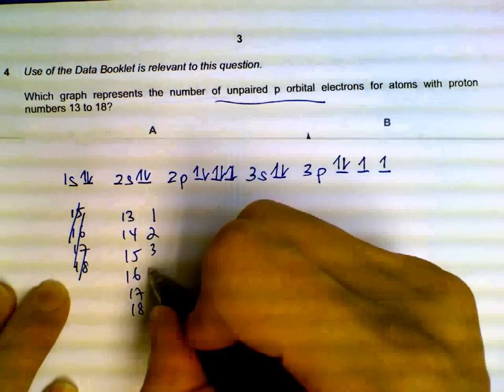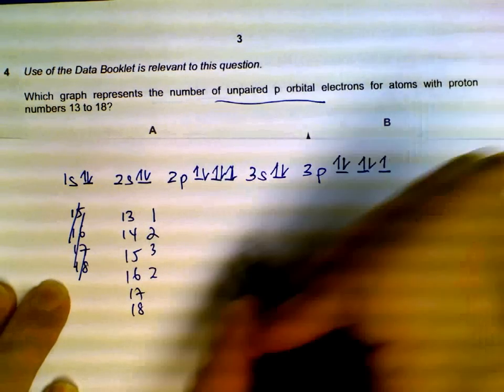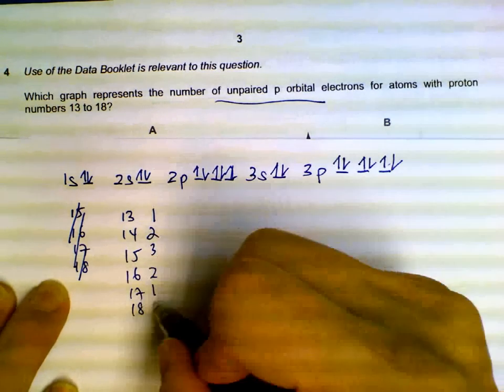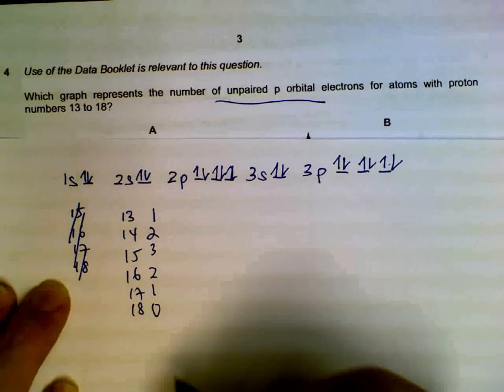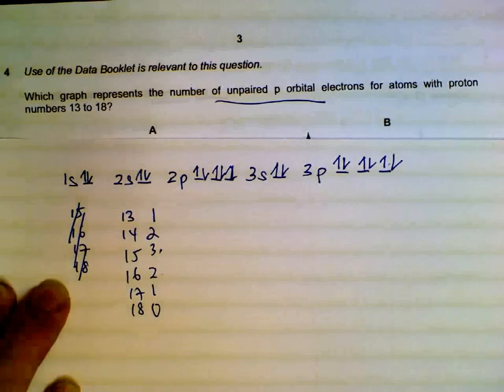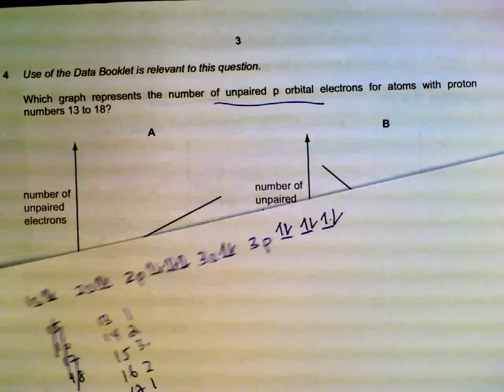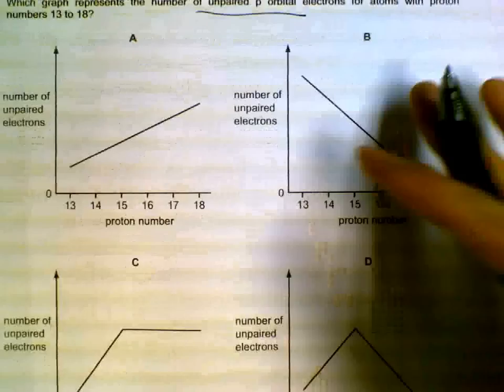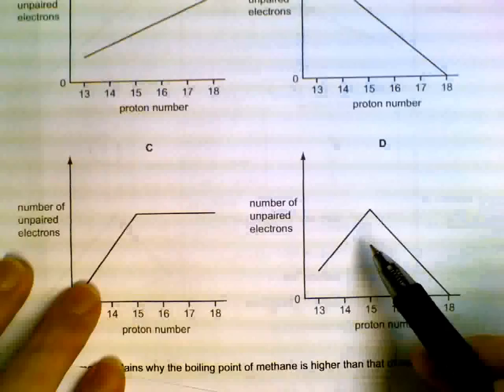After 15 onwards, we start to have to pair them up. 16 - two unpaired. 17 - one unpaired. And 18, all of them will be paired up. So you will increase to 15 and then you will start to decrease, which gives us option D.